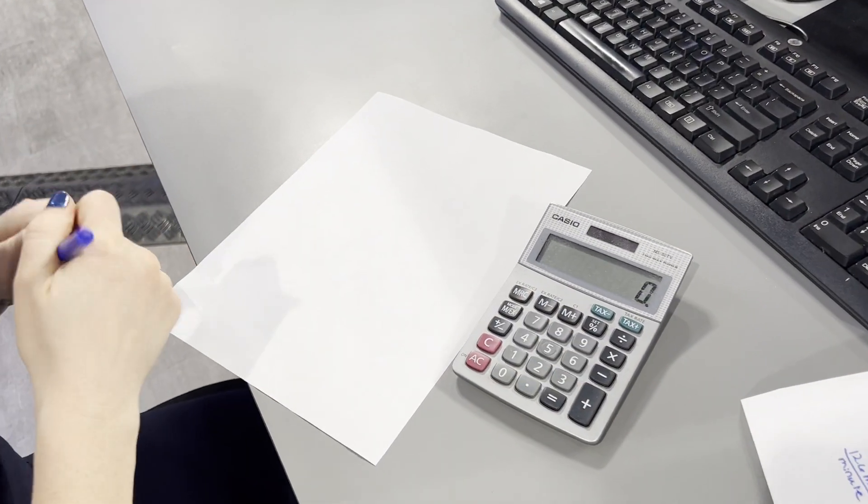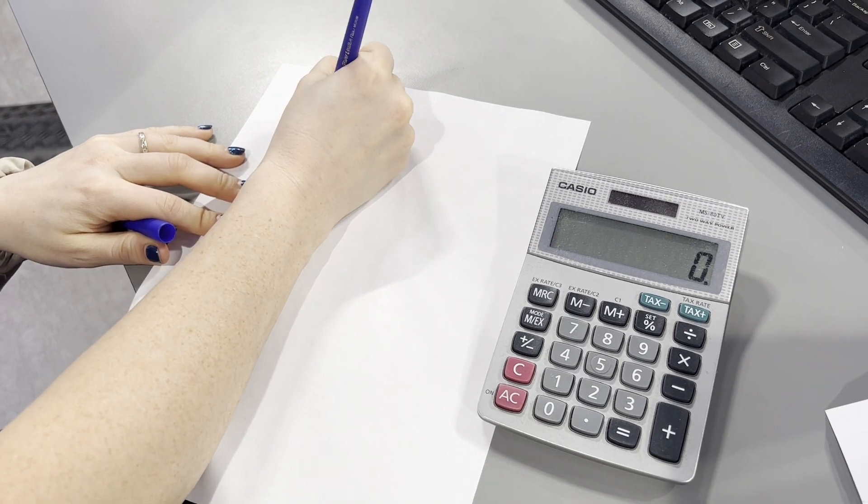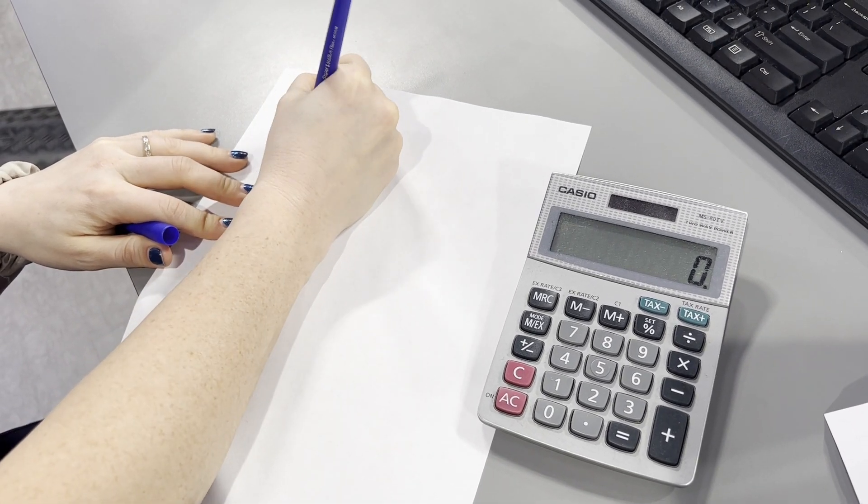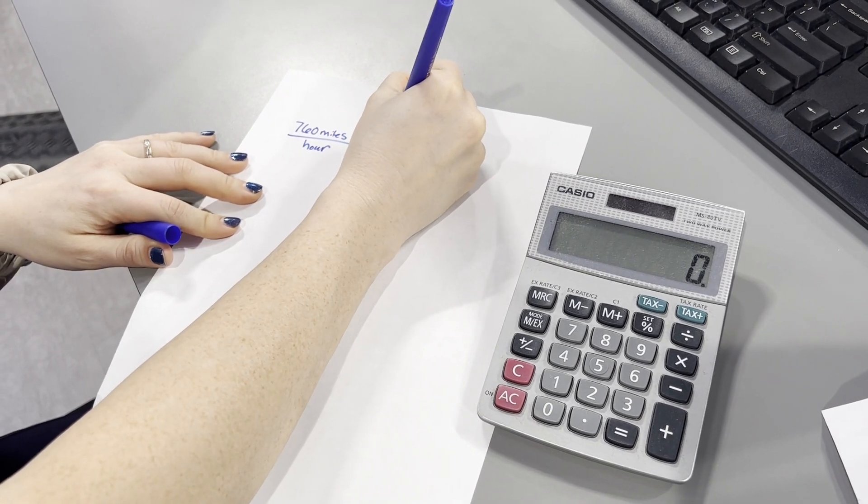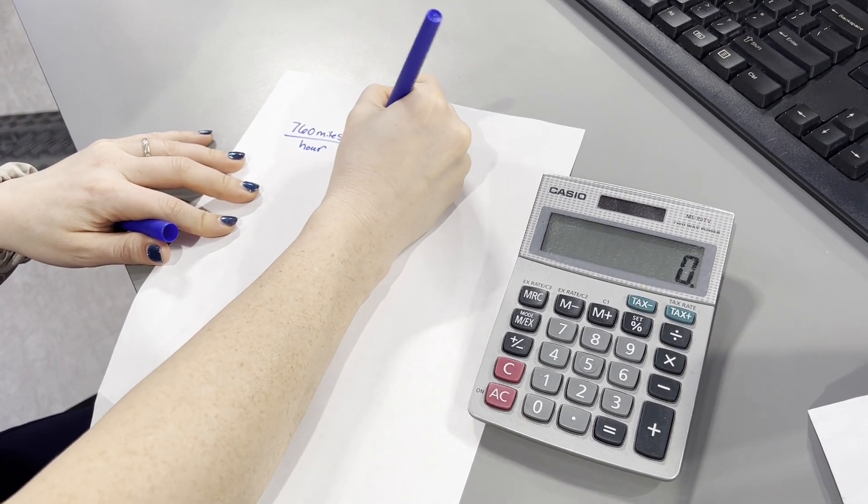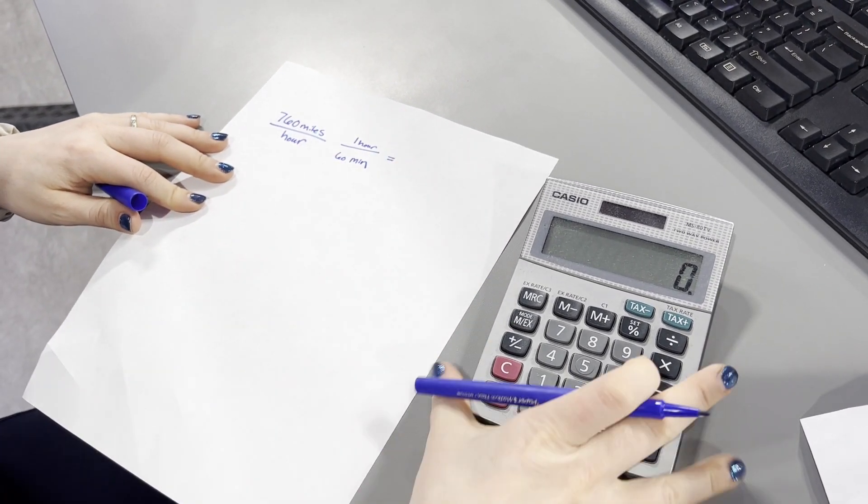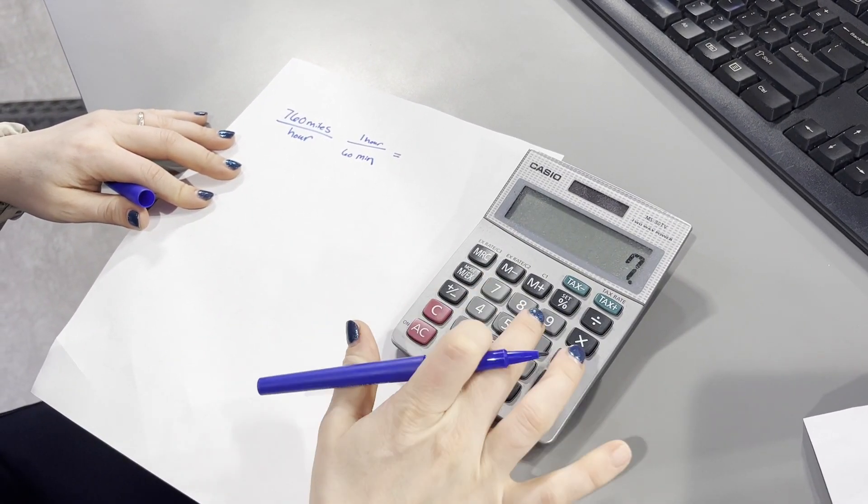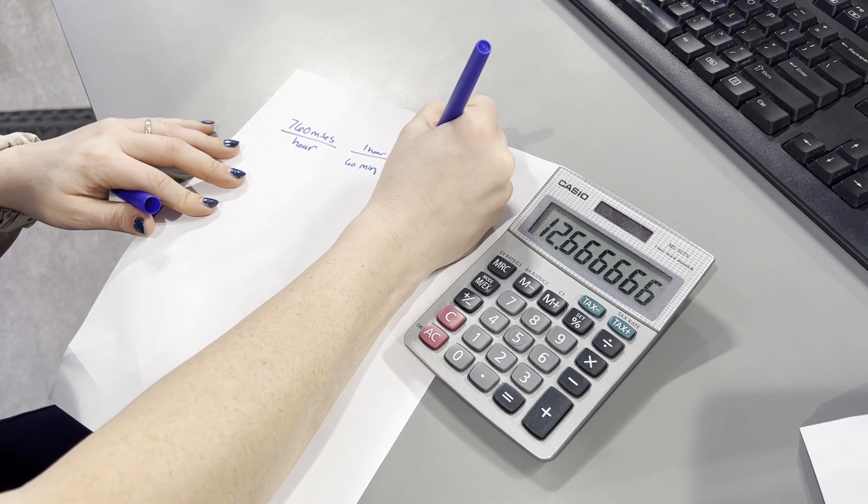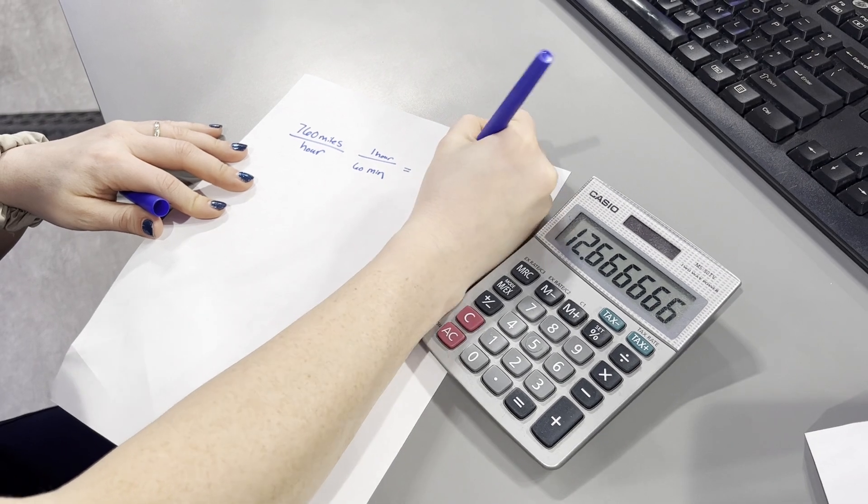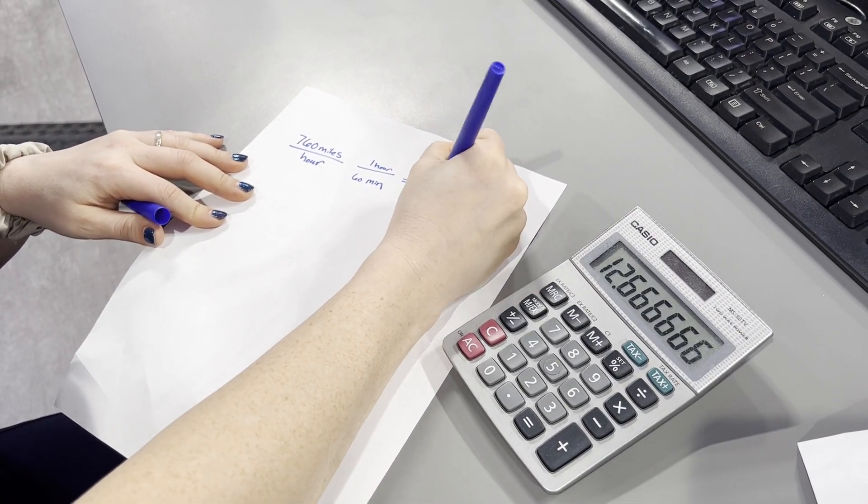So we start with 760 miles per hour. Well, we know that one hour has 60 minutes. So if we divide 760 by 60, we get 12.6 miles per minute.